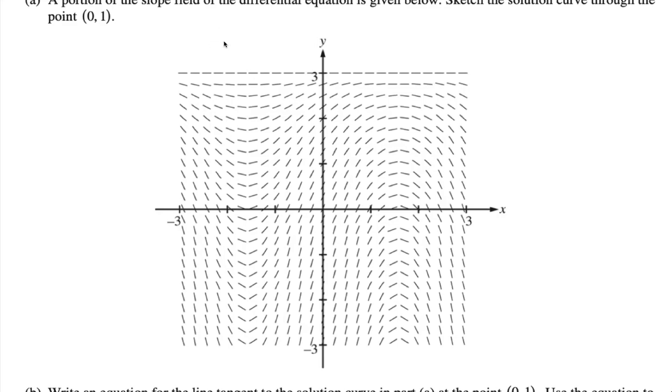We're going to sketch the solution passing through 0 comma 1. 0 comma 1 is right over here. It has to pass through this particular point.